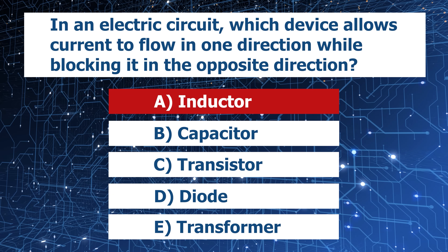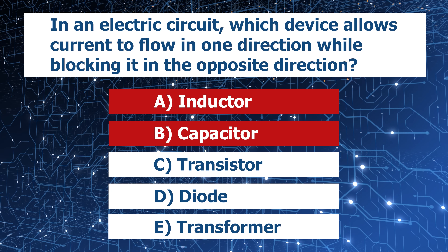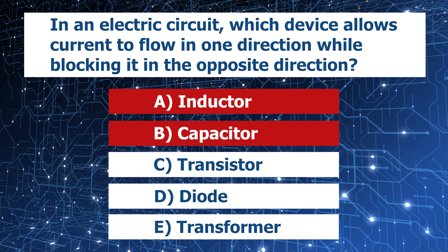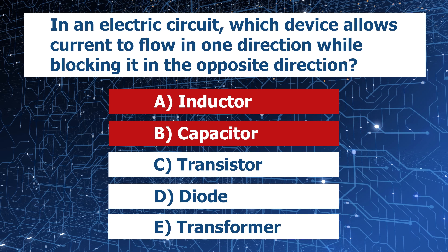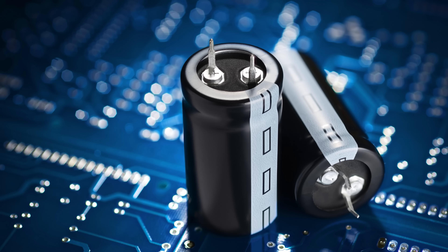Inductors do allow electric current to flow in both directions, so that's not the correct answer. Next, let's talk about the cousin of the inductor, also known as the capacitor. This one also is not correct. A capacitor allows current to flow in both directions, but a capacitor essentially stores energy in the form of the electric field in between the two plates of the capacitor.